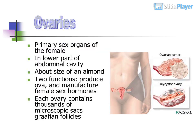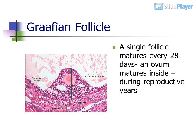Ovaries are the primary sex organs of the female. Located in the lower part of the abdominal cavity, about the size of an almond. They have two functions: produce ova and manufacture female sex hormones. Each ovary contains thousands of microscopic sacs called Graafian follicles.